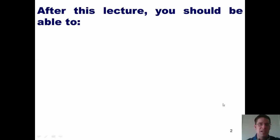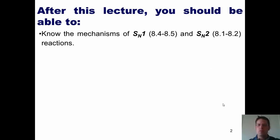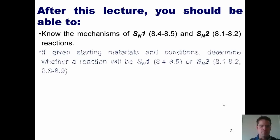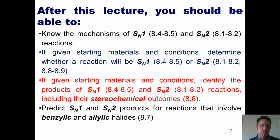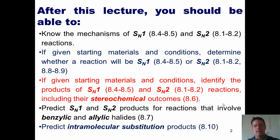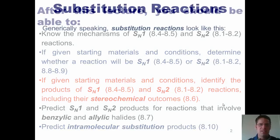After this lecture, you guys should be able to know the mechanisms of SN1 and SN2 reactions. If given starting materials and conditions, determine whether a reaction will be SN1 or SN2. If given starting materials and conditions, identify the products of SN1 and SN2 reactions, including their stereochemical outcomes, and predict SN1 and SN2 products for reactions that involve benzylic and allylic halides. You should also be able to predict intramolecular substitution products.